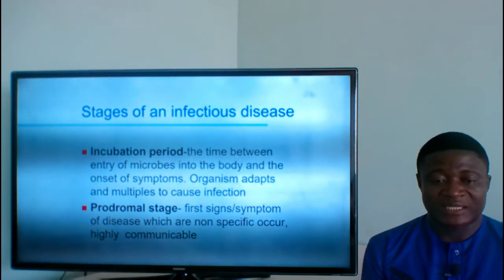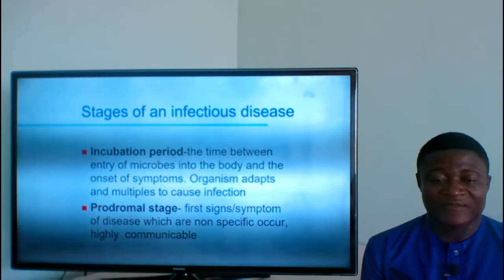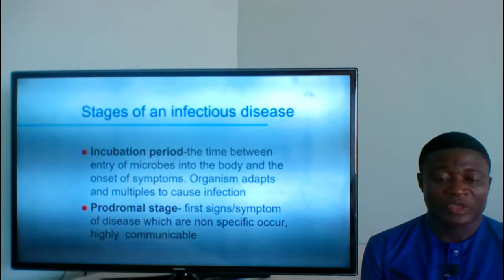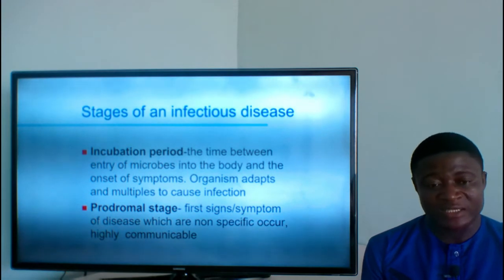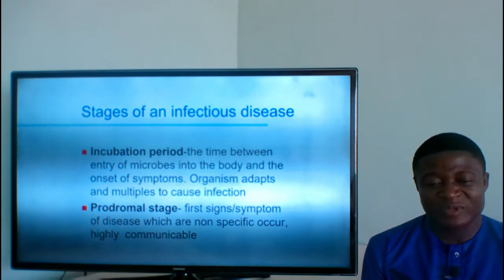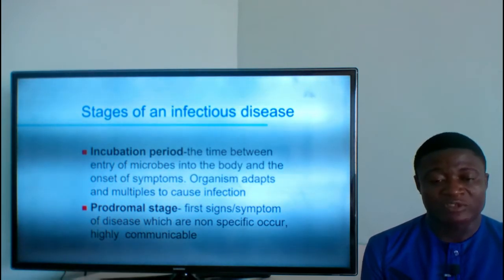The prodromal stage is the stage where the first non-specific signs and symptoms of a disease occur. At this point, the disease is highly communicable. The person shows signs not specifically related to the condition, and we refer to it as the prodromal stage. At this stage, the person can easily transmit the disease to others.